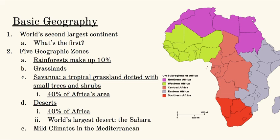The last geographical zone would be the Mediterranean area, where it's a mild climate — not particularly dry, not particularly hot. It's kind of like what we would probably think of here in California.